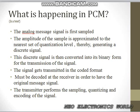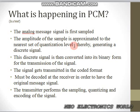What is happening in PCM? In brief, we can see what is happening in PCM. At first, the analog message signal is sampled — that means we pass the analog message signal through a sampler. Then the amplitude of the sample is approximated to the nearest set of quantization levels. After passing the analog message signal through the sampler, we pass the message signal through a quantizer, thereby generating a discrete signal. After quantization, we will get a discrete signal.